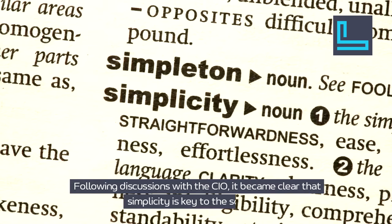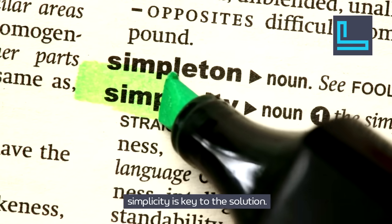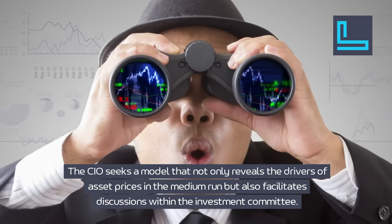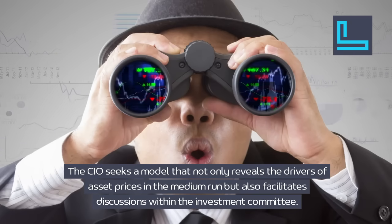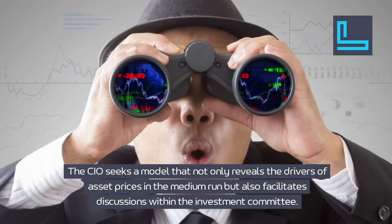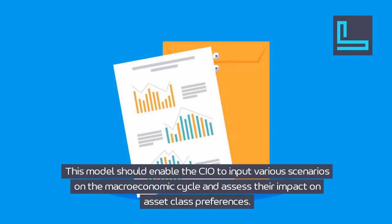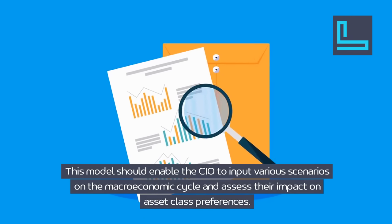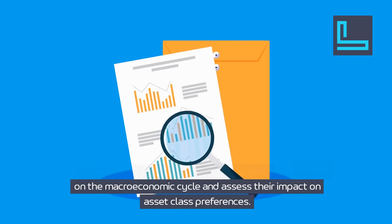Following discussions with the CIO, it became clear that simplicity is key to the solution. The CIO seeks a model that not only reveals the drivers of asset prices in the medium run, but also facilitates discussions within the investment committee. This model should enable the CIO to input various scenarios on the macroeconomic cycle and assess their impact on asset class preferences.